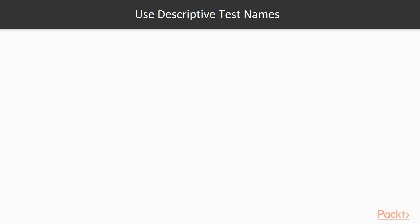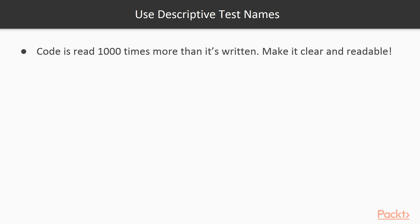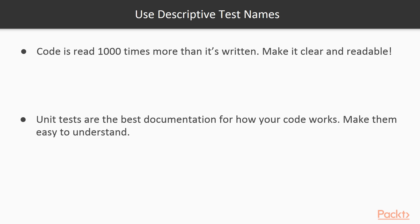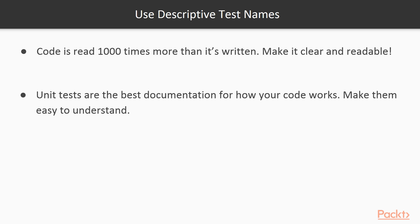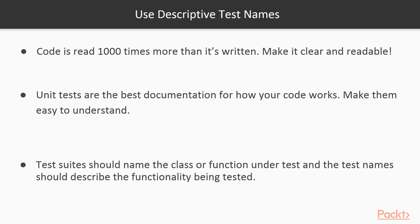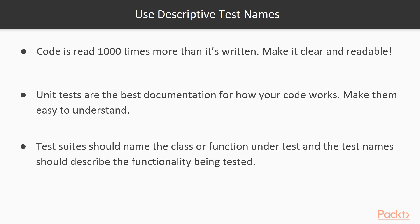Always use descriptive test names. The code is read thousands of times more than it's written as the years go by. Making the code clear and understandable should be the top priority. Unit tests are the best documentation for the developers that come after you for how you intended your code to work. If they can't understand what the unit test is testing, that documentation value is lost. Test suites should name the class or function that is under test, and the test name should describe the functionality that is being tested.